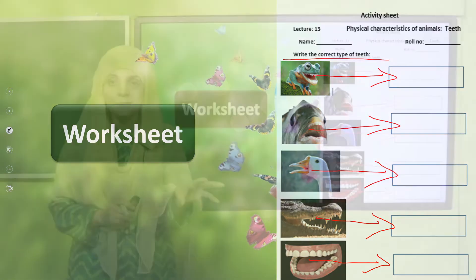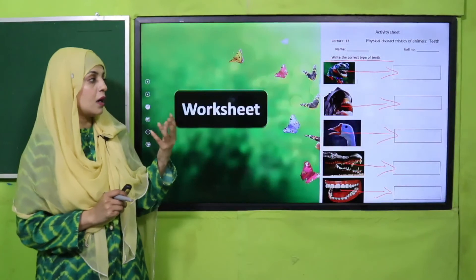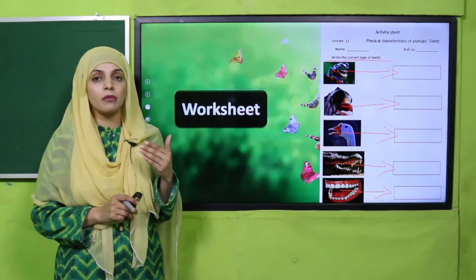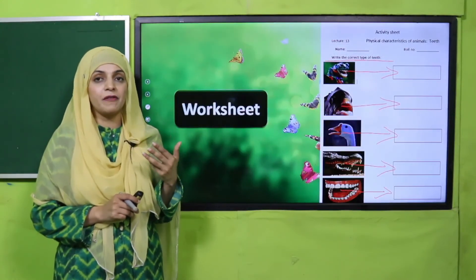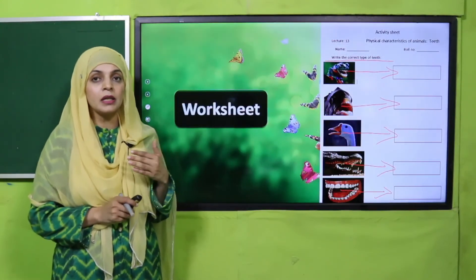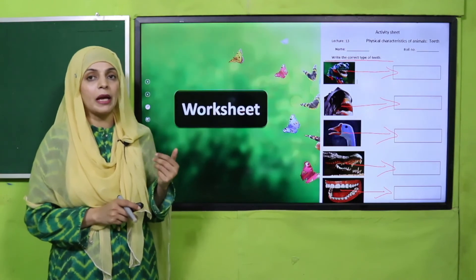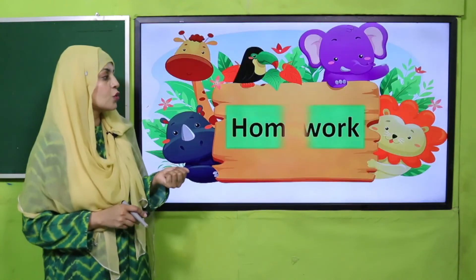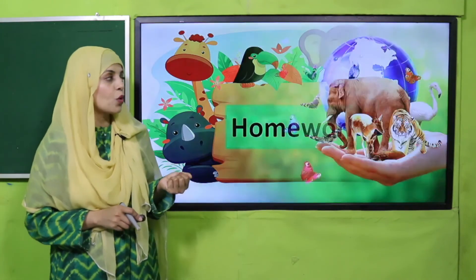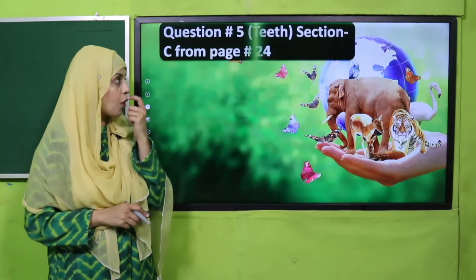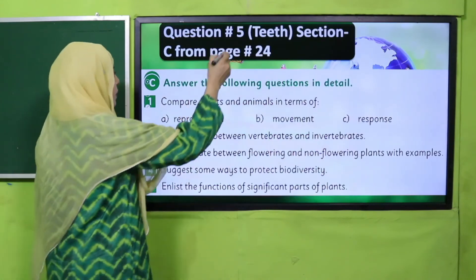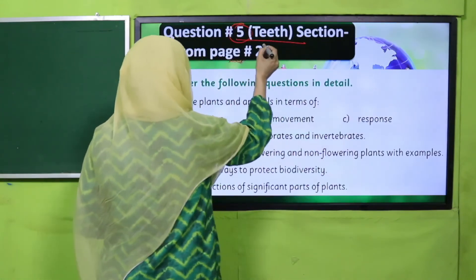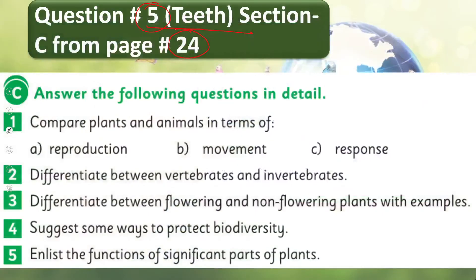You can take help from the book for spellings if you find any difficulty in writing the names of the types of teeth. For homework, you will do question number five — the teeth part only — on page number 24.